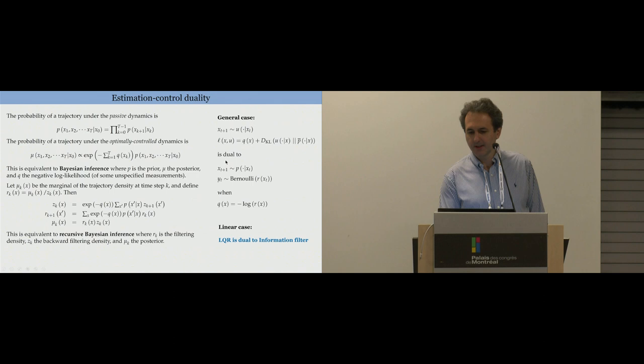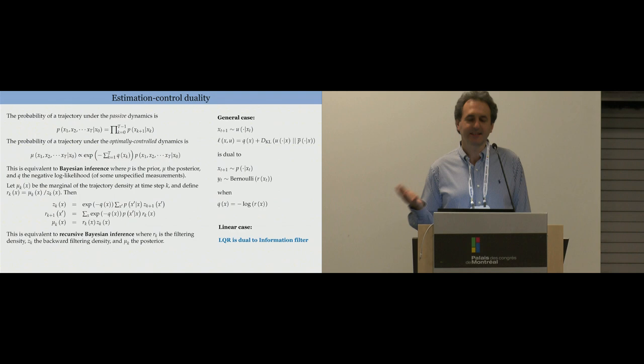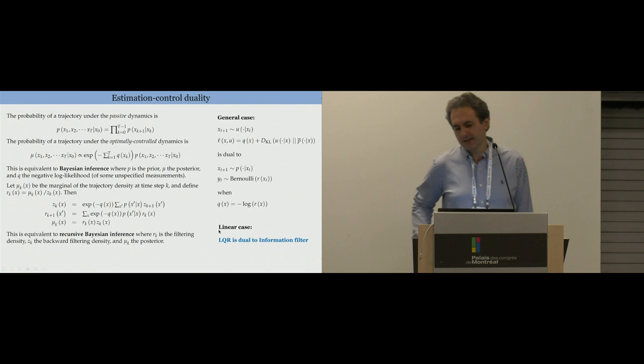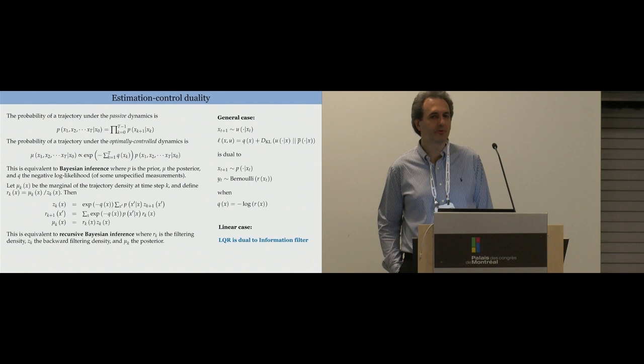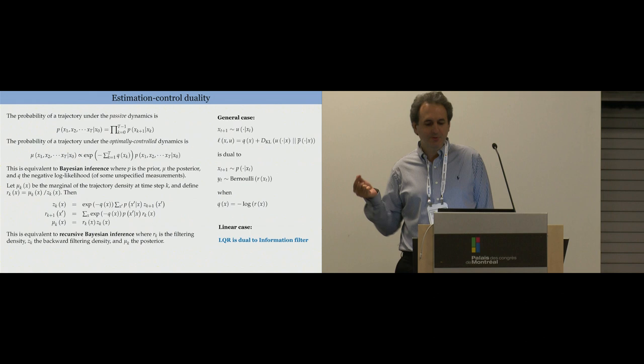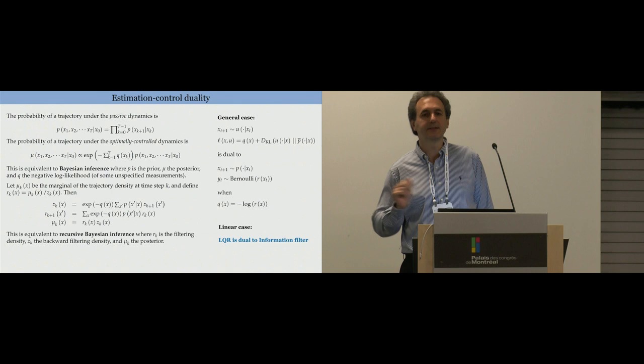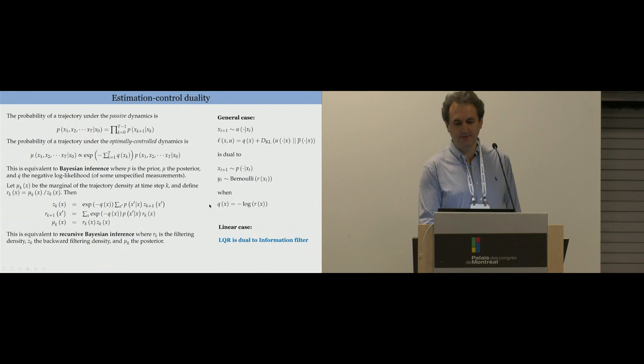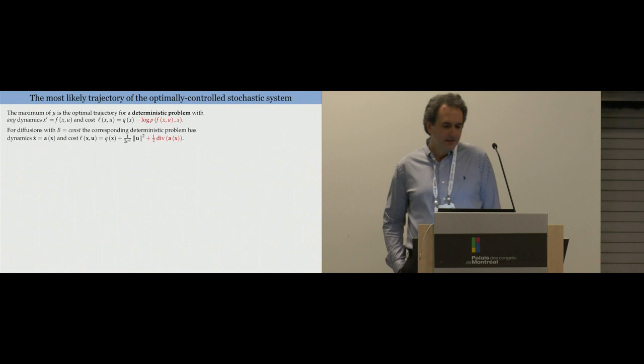The general control problem is dual to this general estimation problem. One really interesting thing that fell out of this is the ancient thing that Kalman did. He discovered half a century ago that the Kalman filter is equivalent to a linear quadratic regulator in some way. Turns out the way he set it up doesn't generalize to nonlinear systems. To generalize to nonlinear systems, you want to switch to the information filter instead of the Kalman filter. An information filter is just a filter that propagates the inverse of the covariance matrix. And so that is dual to LQR under this framework.